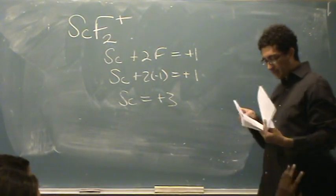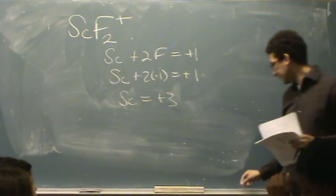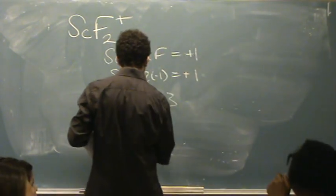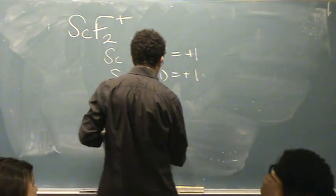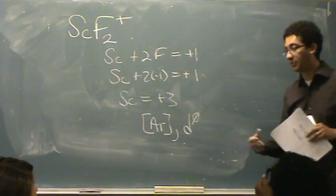So since it's plus 3, I look at my periodic table. Oh, there's no electrons there. So this has the electron configuration of argon, or as I like to write, d0. Meaning no electrons for the d orbitals to work with.